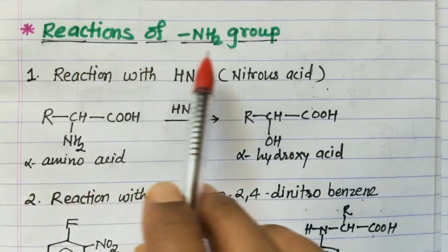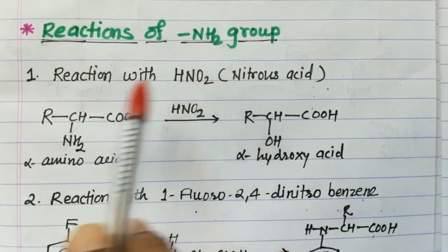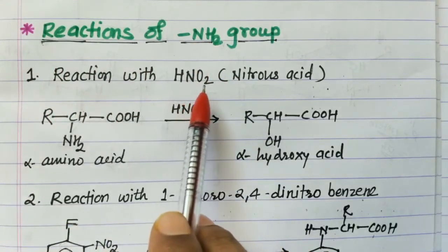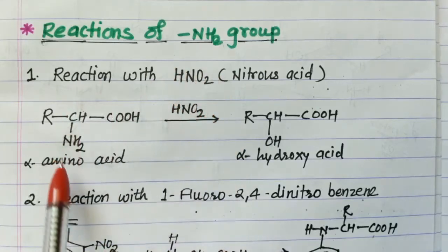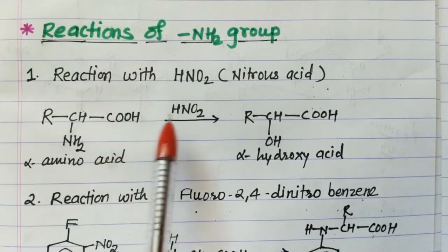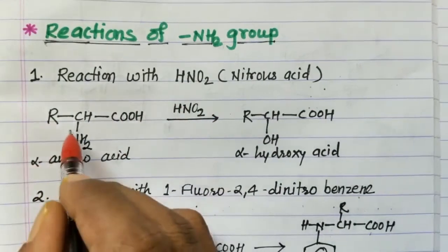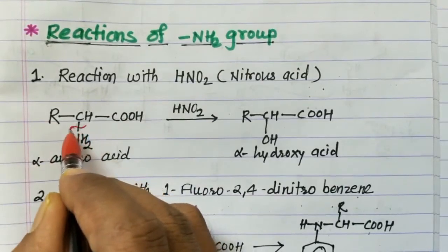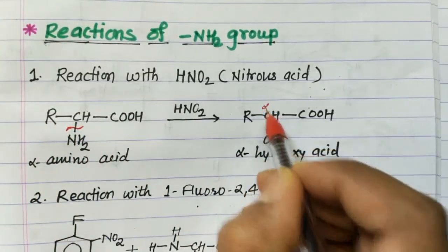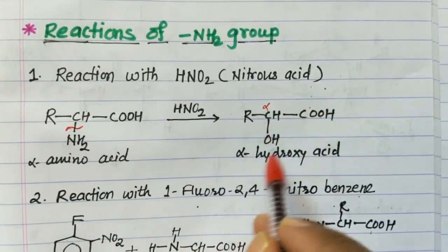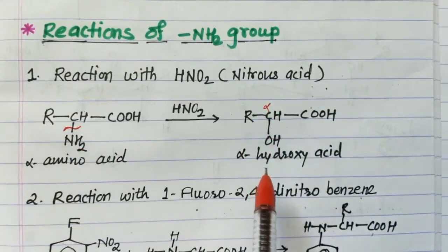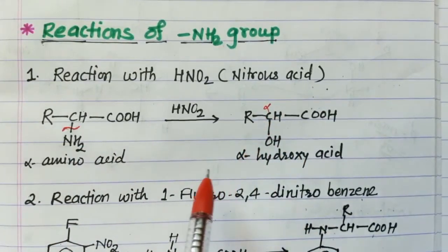Now we look at reactions of the amino group. First reaction is reaction with nitrous acid (HNO2). The amino acid on reaction with nitrous acid shows replacement of the NH2 group by OH, giving the alpha-hydroxy carboxylic acid. This is one of the important reactions to obtain alpha-hydroxy carboxylic acids.